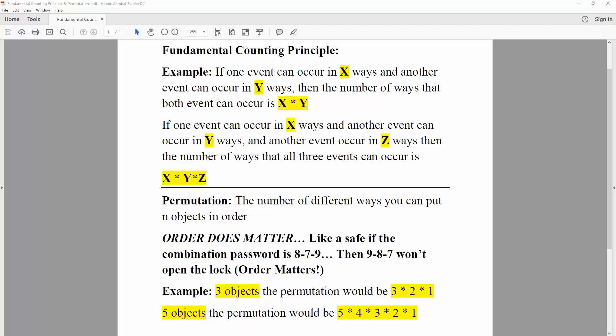In this reference video, we will go over fundamental counting principles and permutations. For the fundamental counting principles, if one event can occur in x ways and another event can occur in y ways, the number of ways that both events can occur would be x times y.